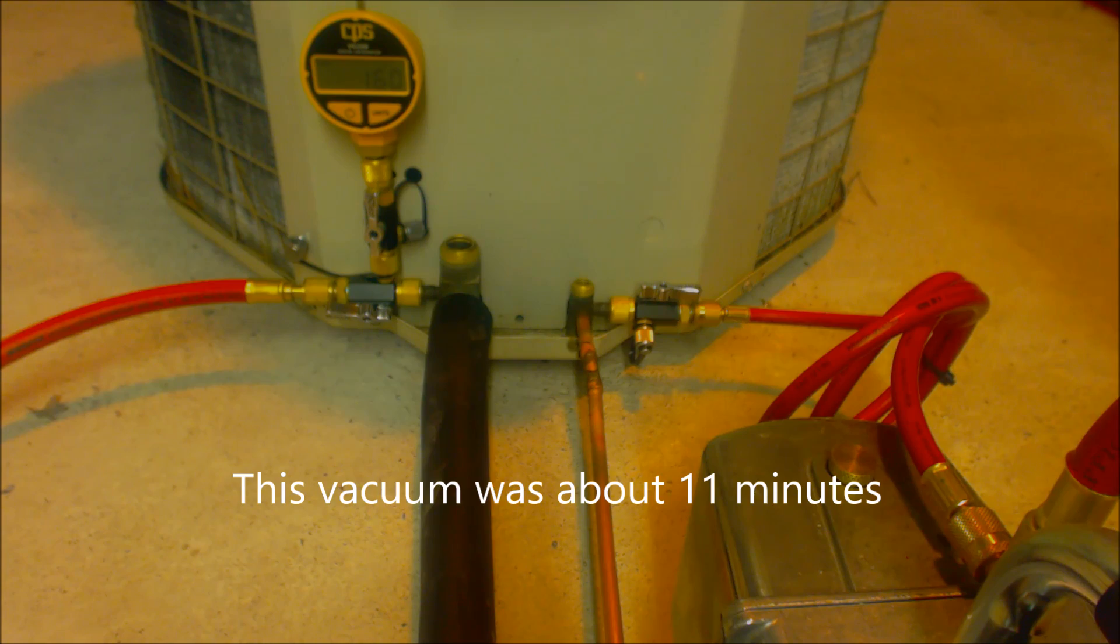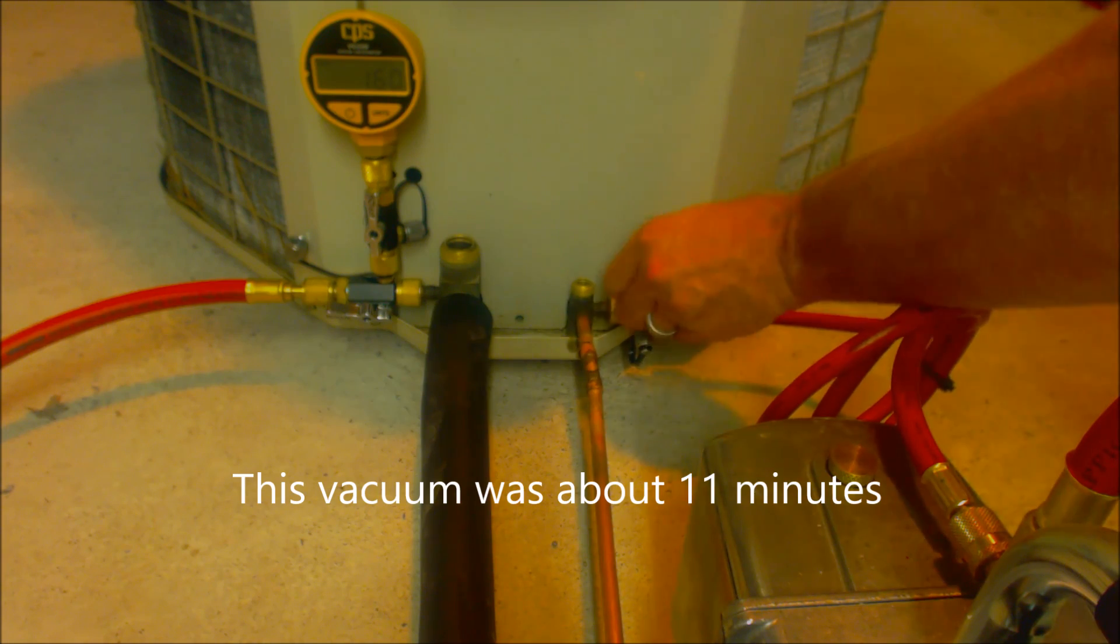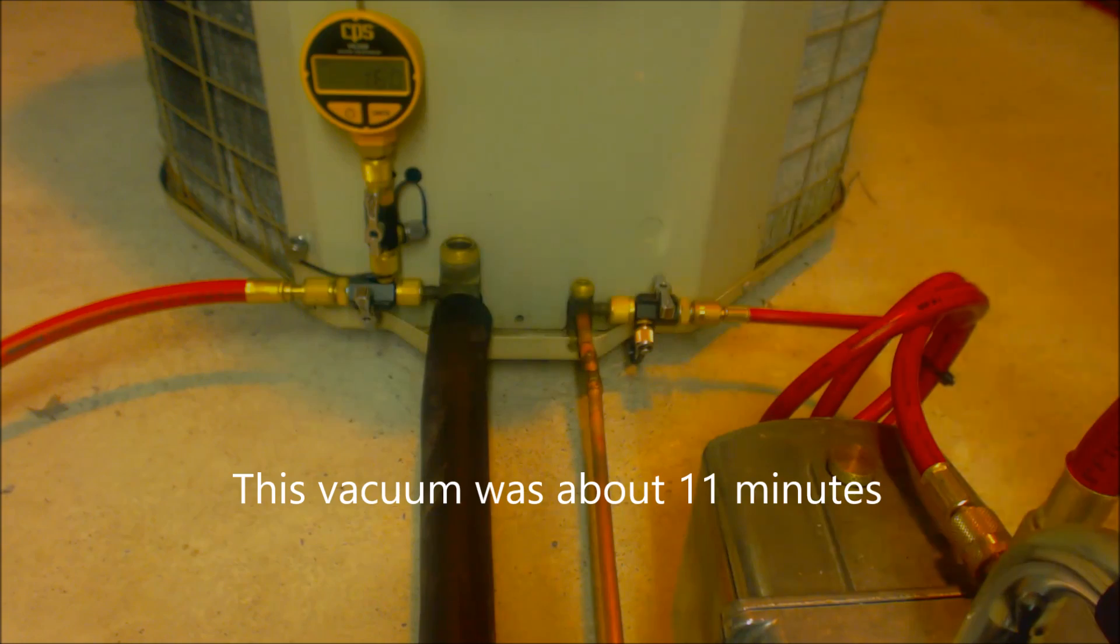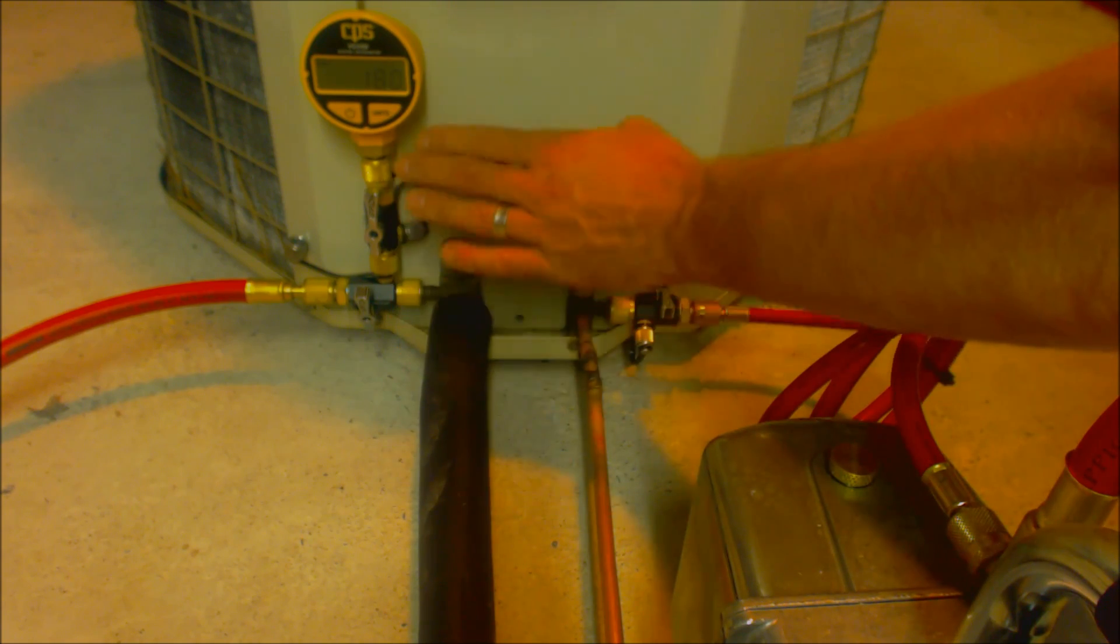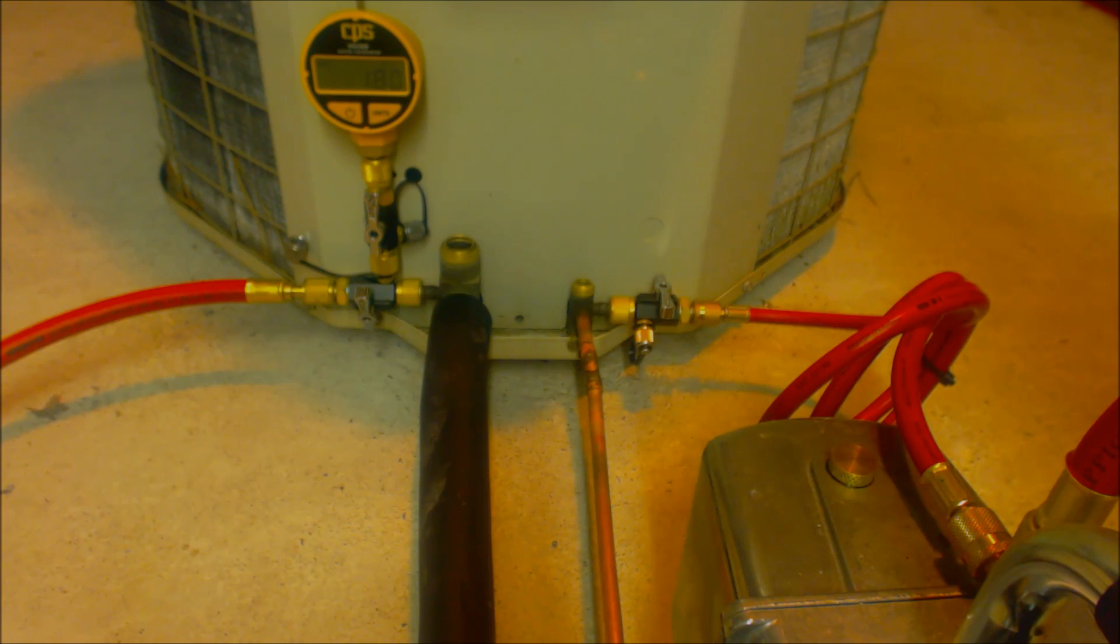Okay, so now we're going to shut the valve cores off and turn the pump off. Now we're going to watch the micron level to see if it rises. What we just did is we turned off the valve cores and we isolated the hose and the vacuum pump from the line set and micron gauge. We're going to let this sit for a little bit and just watch the micron level and make sure it does not rise above 500 microns. If it rises above 500 microns, then we know that we either have moisture in the system or there's a leak.